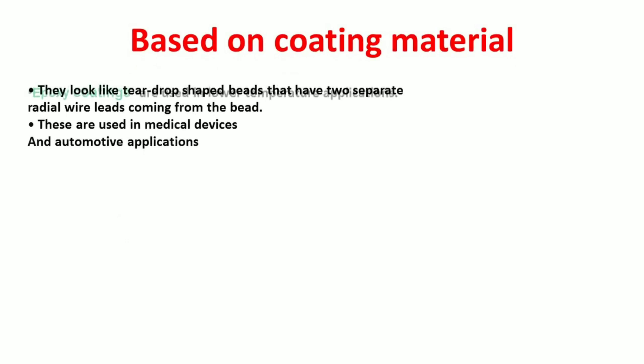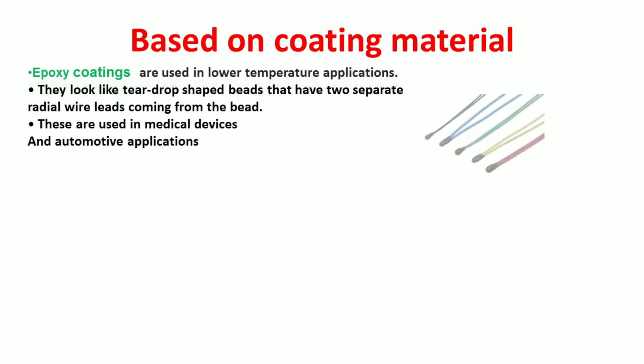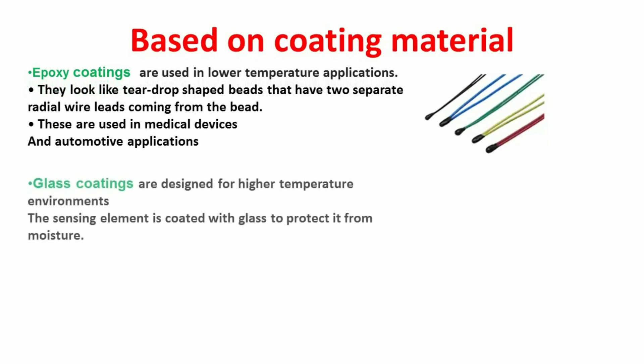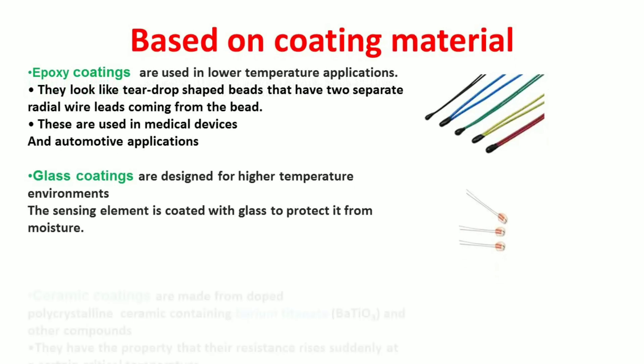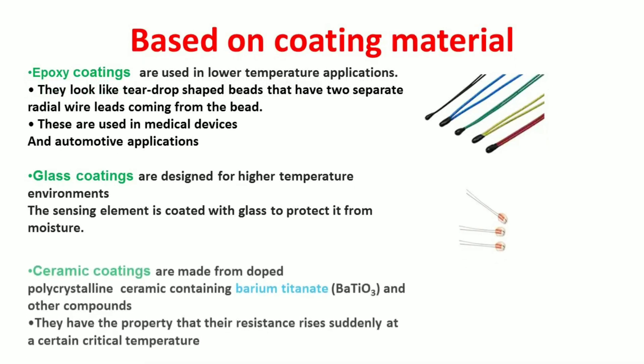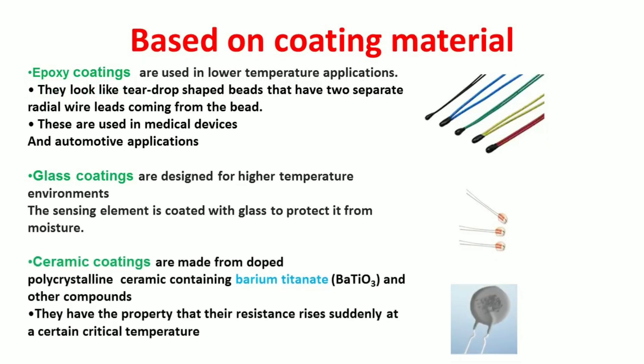Based on coating materials, they are classified as epoxy coatings, glass coatings, and ceramic coatings. Epoxy coatings are used at lower temperatures. Glass coatings are used for higher temperatures. The sensing elements in glass coatings are coated with glass to protect it from moisture. Ceramic coatings are made from doped polycrystalline ceramic and other compounds. Coming to the advantages, they are small, cheap, and have excellent sensitivity.